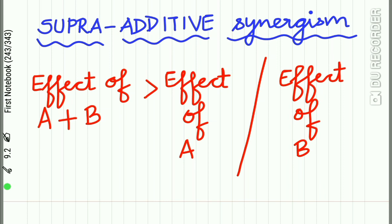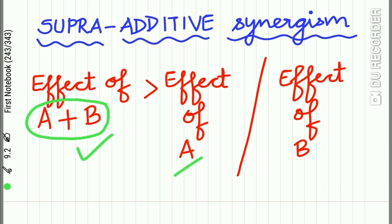In supra-additive synergism, the effect of the combination of two drugs is greater than the sum of the individual components. So the effect of drug A and drug B given together is always more than the effect of either drug given individually.